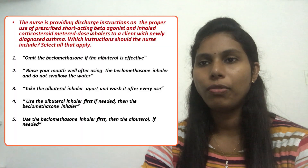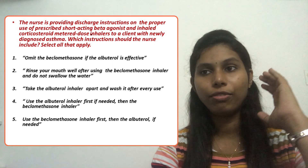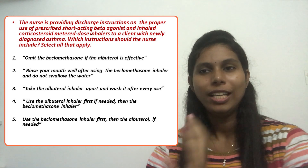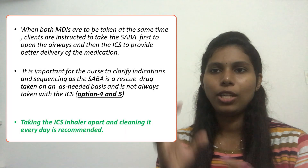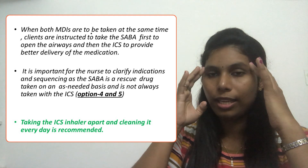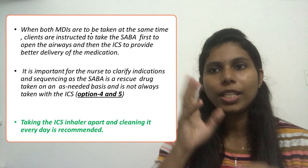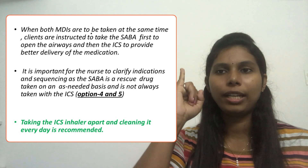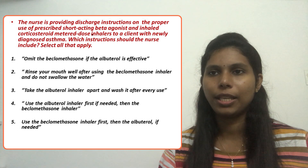Option 5 says use the beclomethasone inhaler first, then the albuterol if needed — that is incorrect. We said albuterol first, then beclomethasone. So we eliminate option 5. Whenever you see such options, try to eliminate the ones you are clear about first, then work through the more difficult ones. We now have option 4 confirmed as one correct answer, and three remaining options to evaluate.